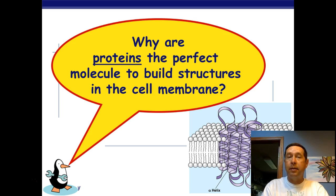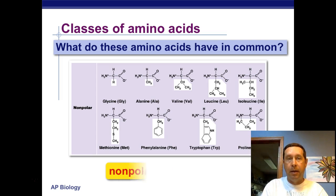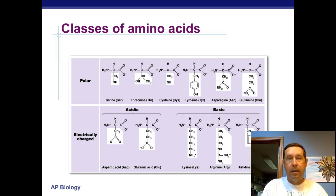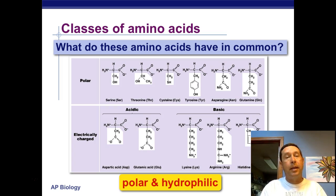Why are proteins the perfect molecule to build structures in the cell membrane? Because different amino acids can be polar or nonpolar. Here are some of the nonpolar amino acids, and here are the polar or electrically charged ones. The polar parts are going to be on the outside of the membrane and the nonpolar parts are going to be on the inside.